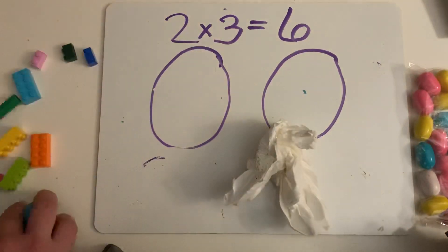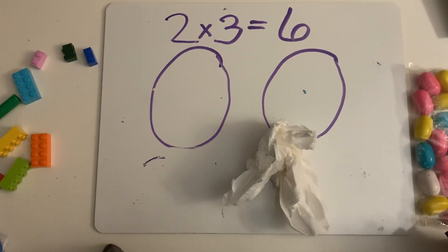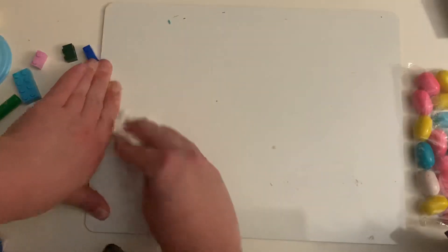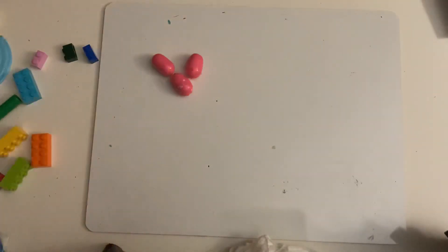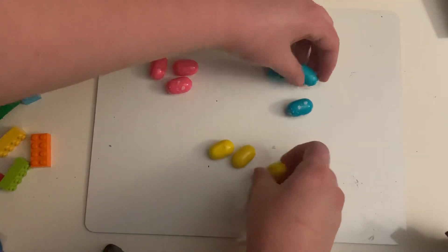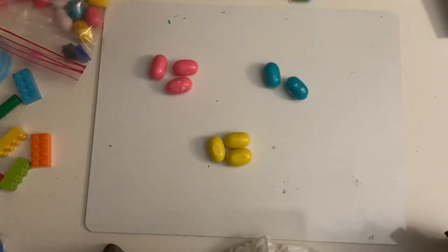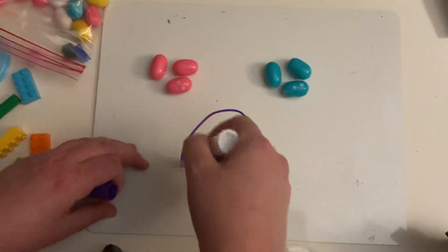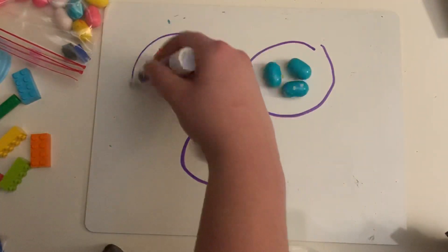Now if you don't have Play-Doh and if you don't have Legos at home, you could use any snack of your choice. And one snack that I have at my house right now is bubblegum. So I am going to make groups of bubblegum. I have one group, two group, oops my bubblegum is rolling away, three groups. So I have one, two, three groups.